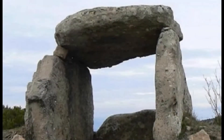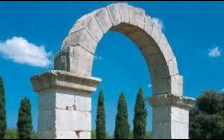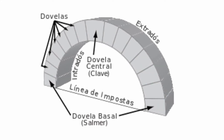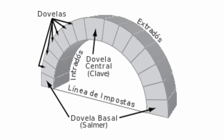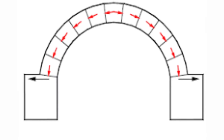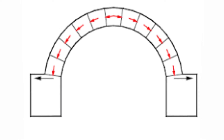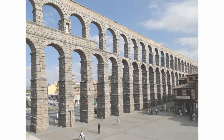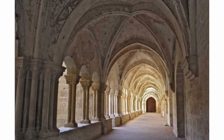In vaulted structures, lintels are substituted for arches. These arches are formed by pieces called vussoirs and a central piece called the keystone. These pieces are not subjected to bending, only compression. The pillars that sustain the arches could need buttresses. These structures facilitate the construction of structures with open spaces, like bridges, aqueducts, or old buildings.